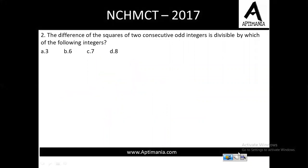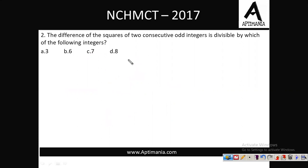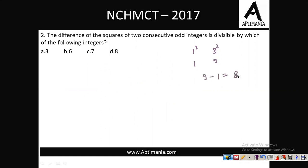Going to the next question. The next question is: the difference of squares of two consecutive odd integers is divisible by which of the following integers? To solve this question, you can simply assume any two consecutive odd integers. Let me take the values as 1 and 3. The square of 1 is 1, the square of 3 is 9, and the difference is 9 minus 1 = 8. So the correct answer is 8.